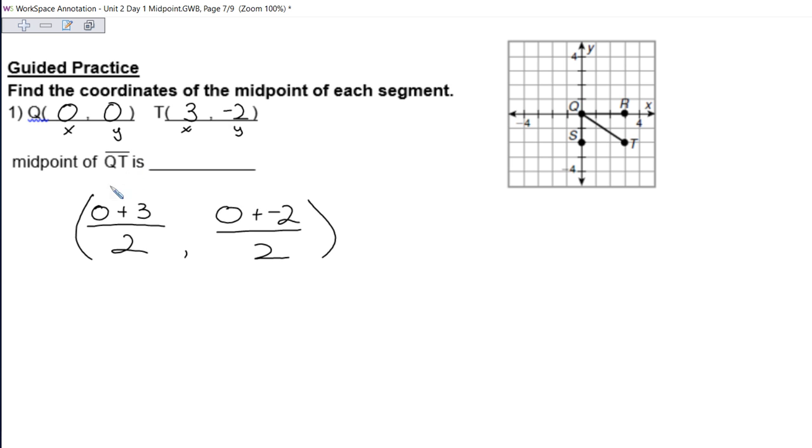0 plus 3 is 3, divided by 2 is 3 halves. 0 plus a negative 2 is a negative 2, and negative 2 divided by 2 is a negative 1. So our coordinate for our midpoint is 3 halves, negative 1.